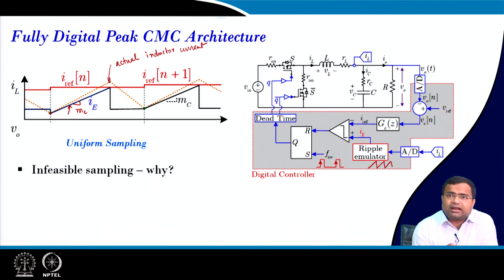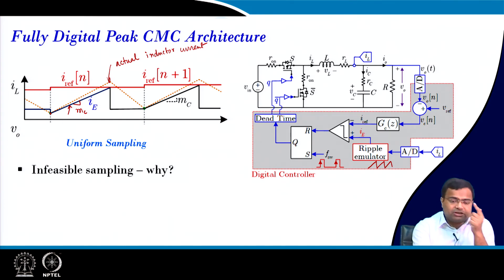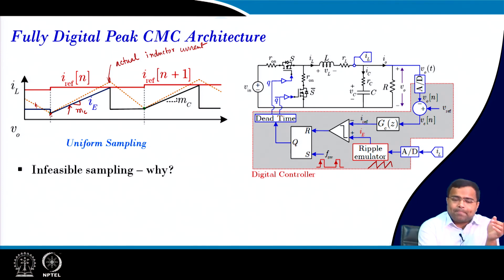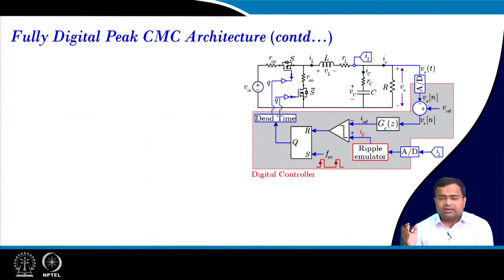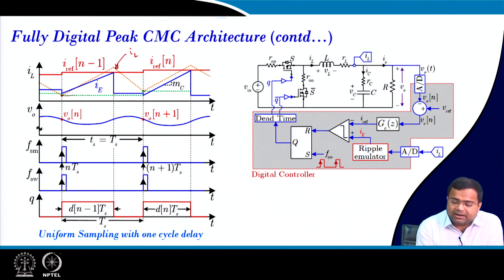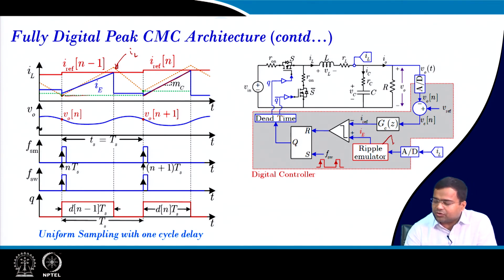We still need the valley current because we need to add the slope, so we cannot simply take the sample here and add it — it will not be the valley current. The natural solution is to give one cycle delay: you capture the current sample at one point but use it in the next cycle, giving sufficient time for conversion. This is the practically feasible implementation. The green line is the sample value of the inductor current, and you add the ramp sawtooth waveform in the next cycle with the sample value, so you retain the valley current information.